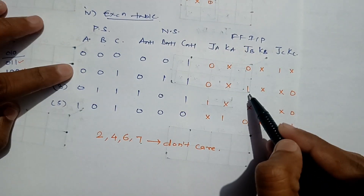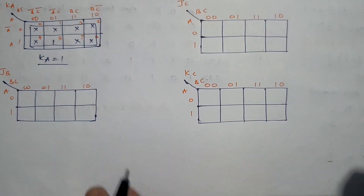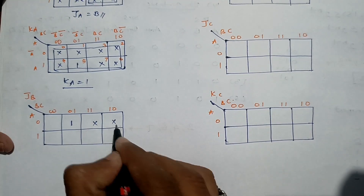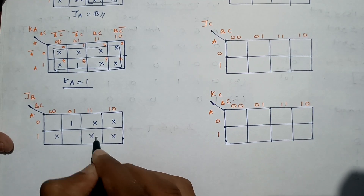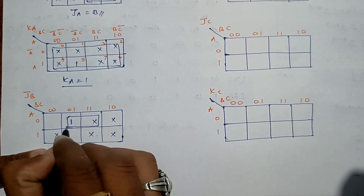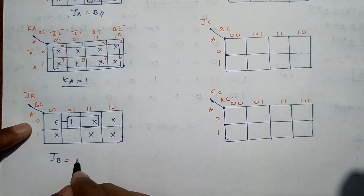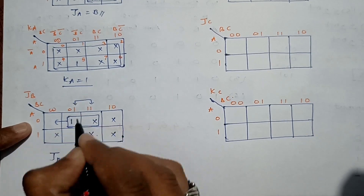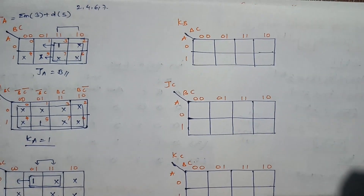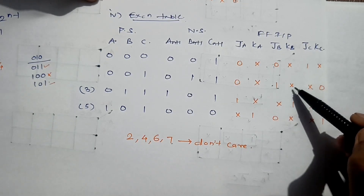For JB: state 1 gives 1, state 3 is don't care, and states 2, 4, 6, 7 are don't care. Grouping: we see Ā at one cell and C common, so JB = Ā·C.